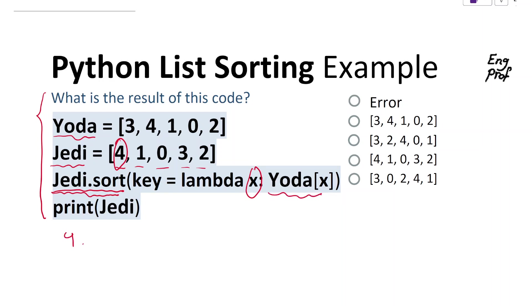So 4 will be Yoda[4], which as you can see, Yoda[4] is 2. So that means in the new sorted Jedi...